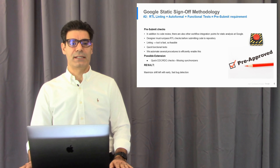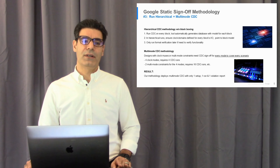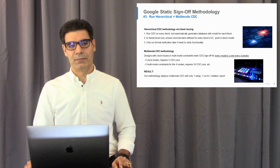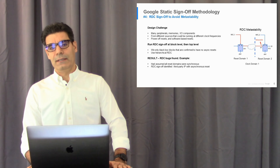Pre-submit checks include very simple, customizable built-in checks on the content or metadata of a change, such as naming conventions and readability standards. Thanks to the fast linting tool, we were also able to enable lint checks in pre-submit. Two other enhancements that we applied to our CDC sign-off to support our complex designs were hierarchical run and multi-mode CDC.